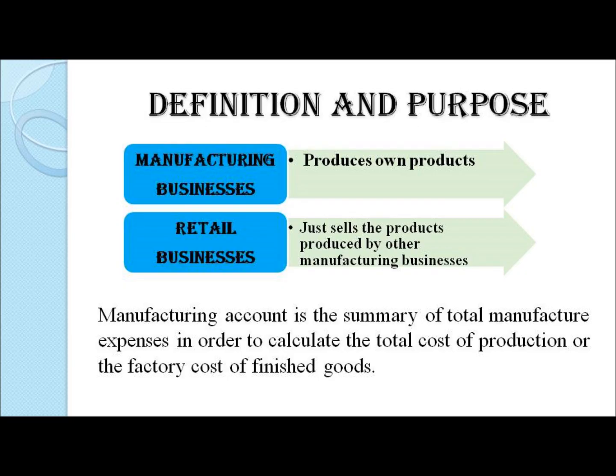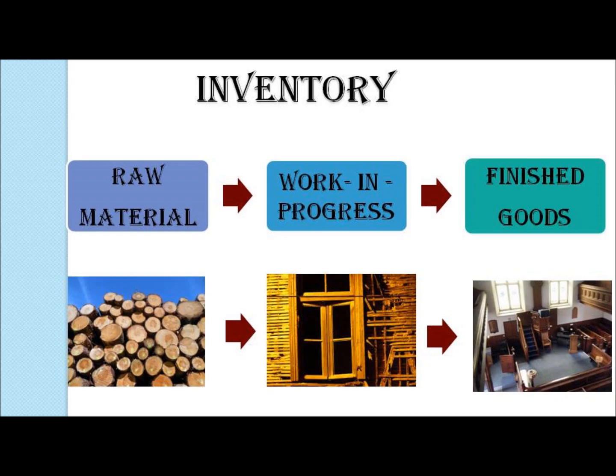A manufacturing account is a summary of total manufacturing expenses in order to calculate the total cost of production. Furthermore, unlike retail businesses in which the inventory consists of just finished goods, in manufacturing businesses the inventory consists of raw material purchased for manufacturing the goods, semi-finished goods termed as work in progress, and finished goods.